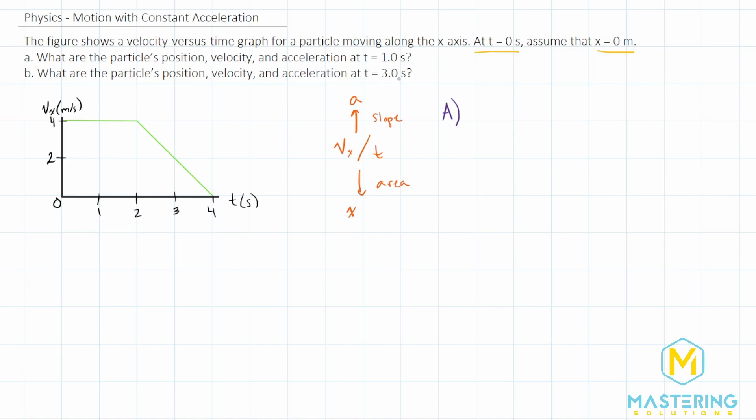So for part A, for the position, we're going to be using the area under the curve to solve for it. We're starting at four meters per second, and at one second, it's gone four. So we have four times one. So the position is four meters.